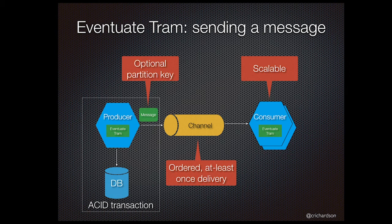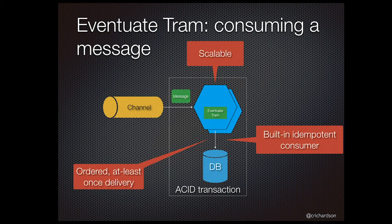A producer publishes messages with a partition key in order to scale consumers while preserving ordering. Eventuate Tram delivers messages with the same partition key to the same consumer instance, implementing this capability on top of message brokers that don't have it built in. A consumer service uses the Eventuate Tram framework to consume messages. In addition to scalable ordered at-least-once delivery, Eventuate Tram also implements the idempotent consumer pattern. You can configure a consumer to use Tram to automatically detect and discard duplicate messages. Tram tracks the messages that have been successfully processed in a database table.